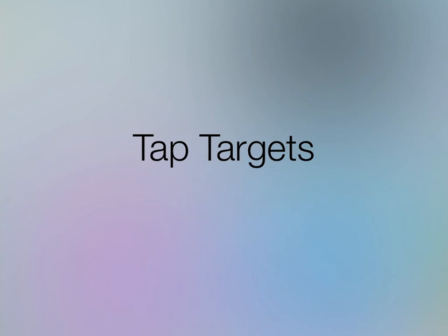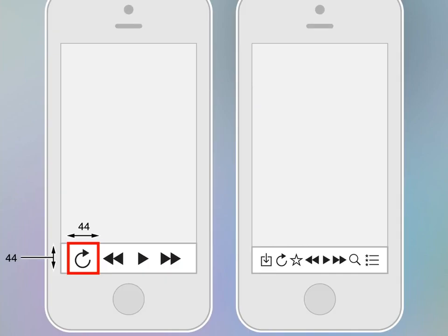Let's talk about layout — specifically tap targets. This hasn't changed, but it's worth mentioning because with iOS 7 there's a blurring of lines between what's actually a button and what's not. If anyone's looked at the top bar in iOS 7, what used to be clearly delineated buttons are now just floating text. The user's finger is really imprecise — meat cursors are not precise like mouse cursors. The minimum size for something you expect the user to tap on is 44 by 44 points.